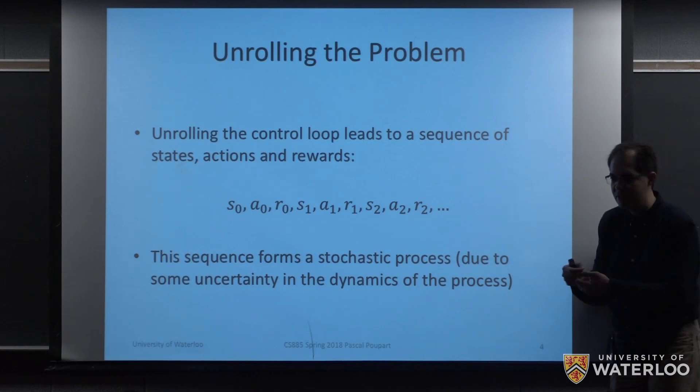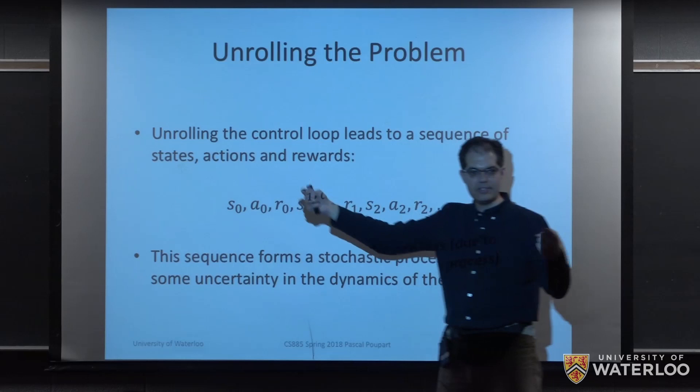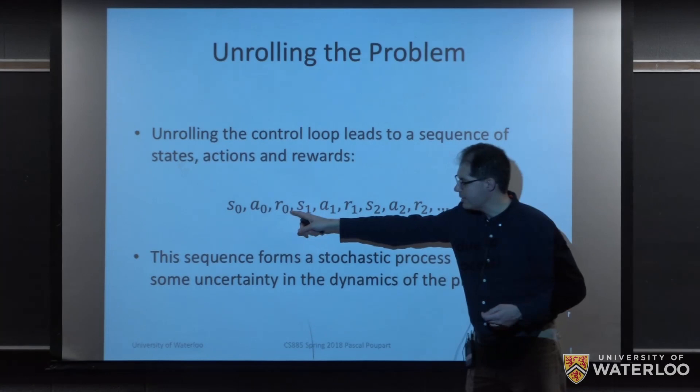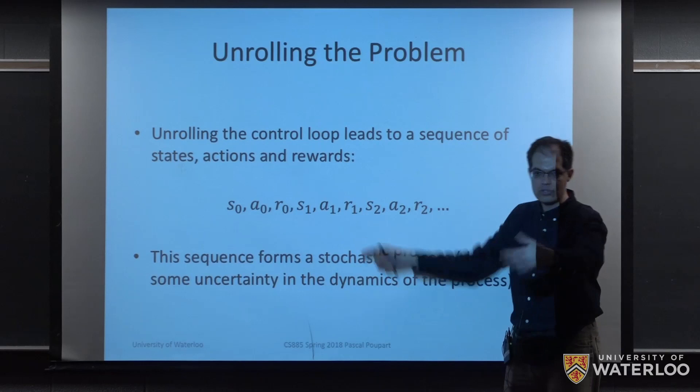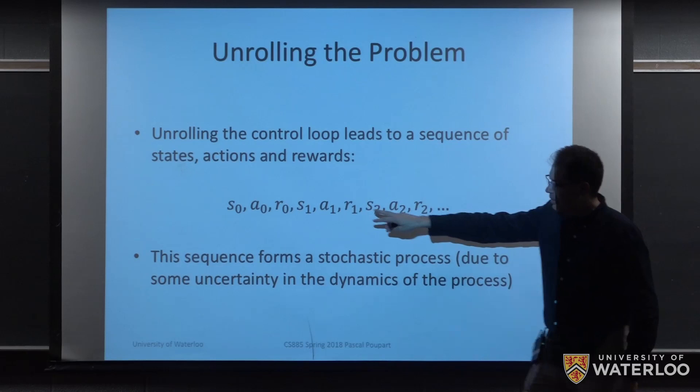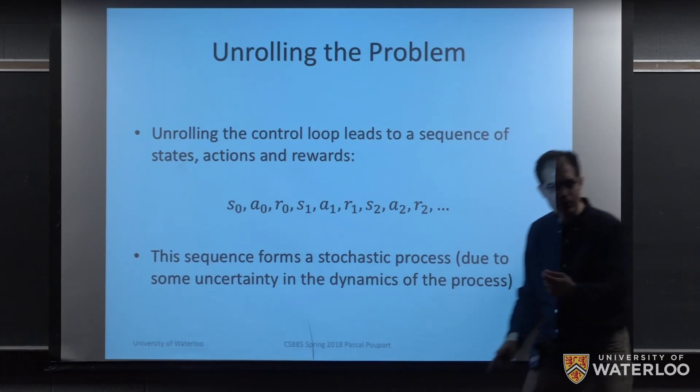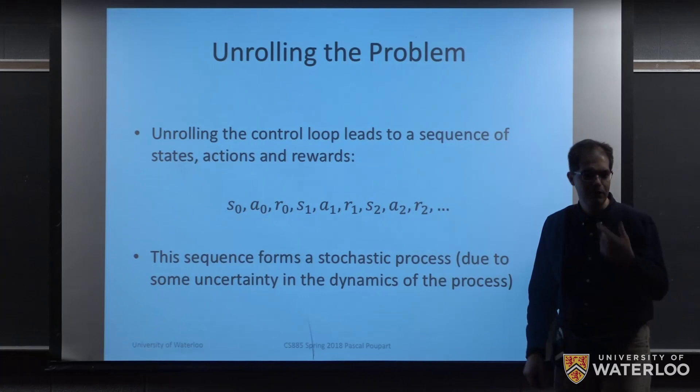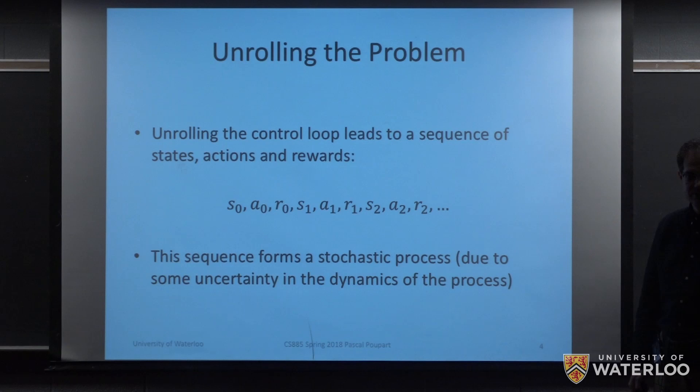If it was deterministic, we could essentially plan ahead everything that would happen. We could say, I'm currently in state zero, then let me execute a certain action. I know what reward I'm going to get and I know what state I would get into. And then I could decide already what is going to be the next action. This would make the problem a lot simpler. The reality is that in practice, even if we know what state the environment is in and we execute an action, we're not certain what reward we're going to get, and we're not sure what is going to be the next state of the environment. So we're going to model this using the notion of a stochastic process.